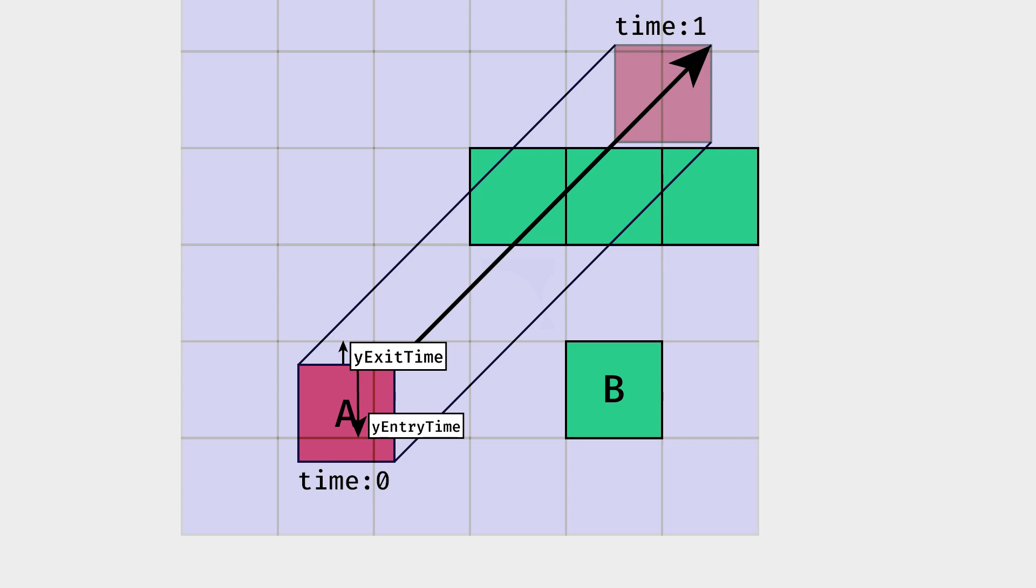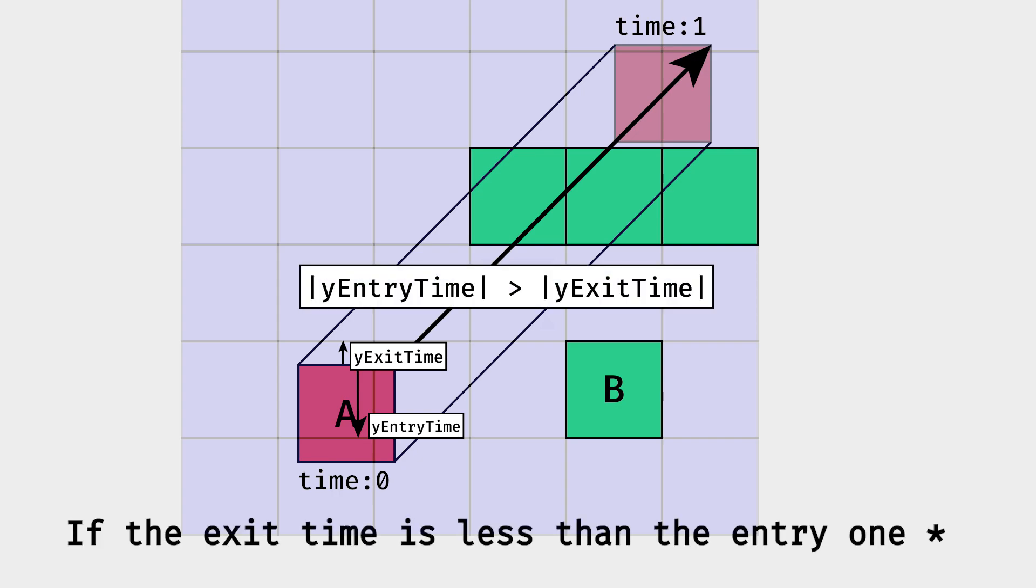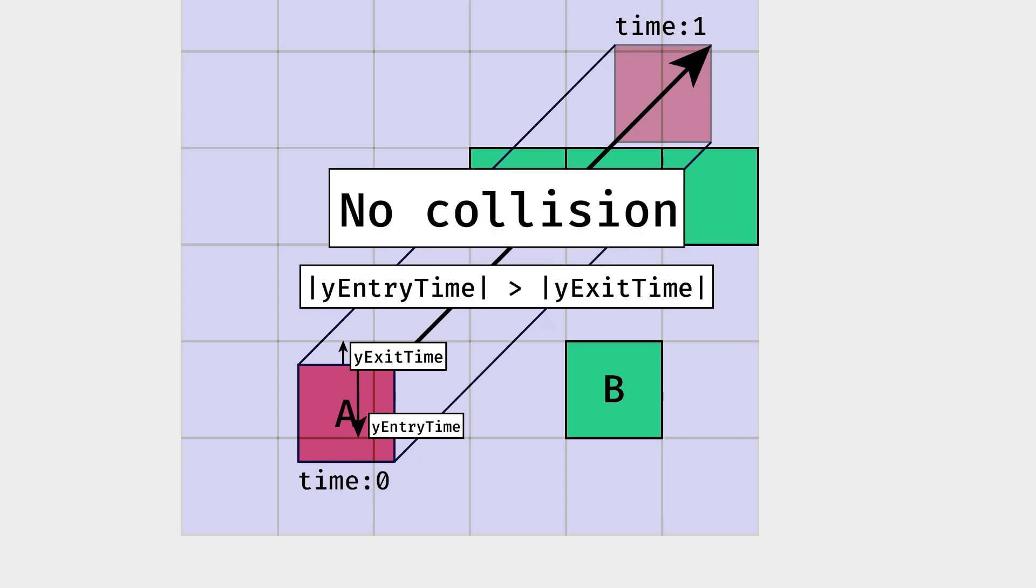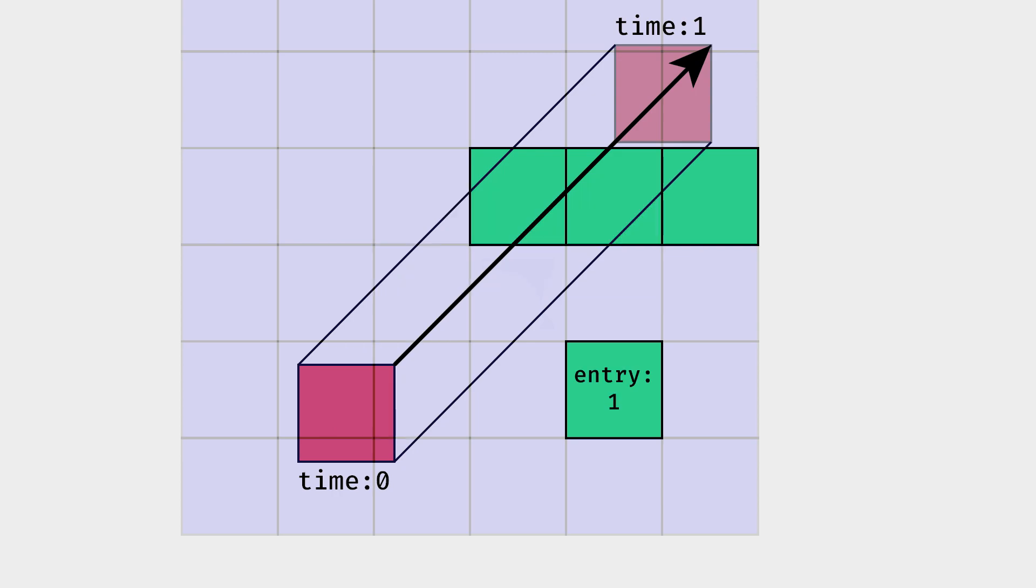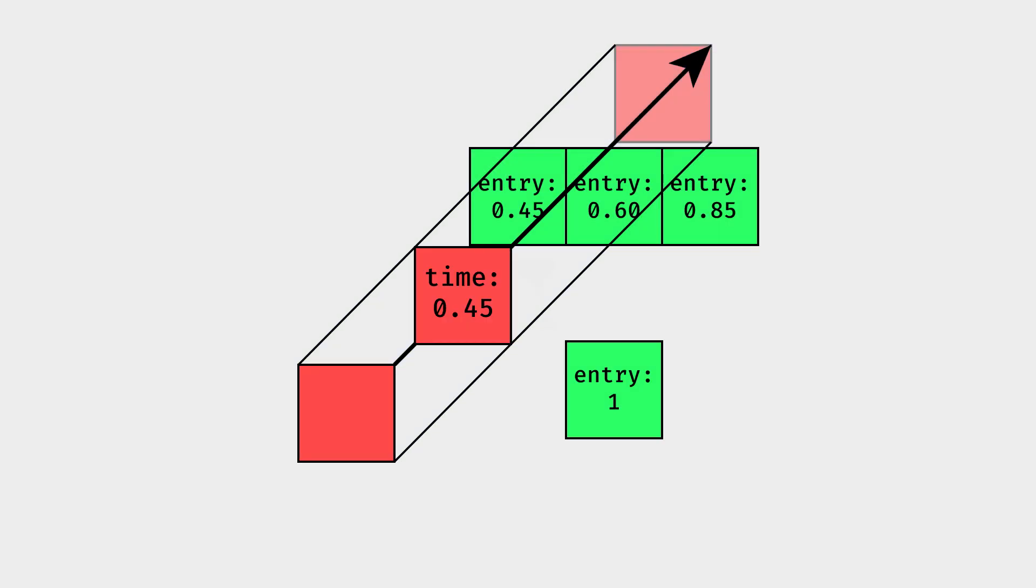For example, if the exit time is greater than the entry one, then there is no collision. When the minimum entry time of the collider into the voxel is calculated, we have to repeat the process to every other one, and keep track of the minimum one. When we exit the loop, we just have to multiply the velocity vector with the minimum time, and voila, the entity is stopped right before entering the first obstacle.